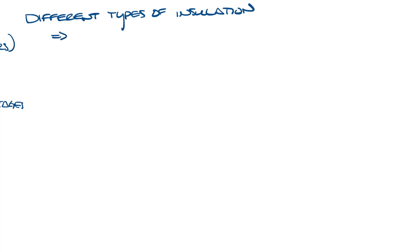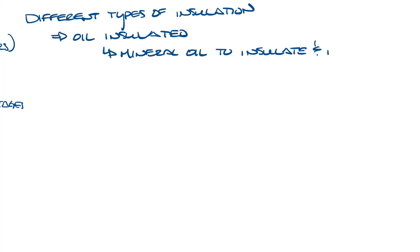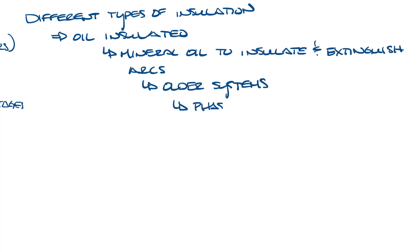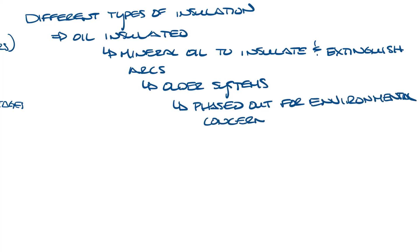There's oil insulated switchgear, which uses mineral oil to insulate components and extinguish arcs during switching. This was a popular choice in older systems, but it is being phased out due to environmental concerns.